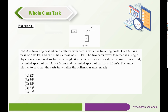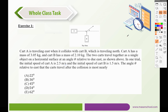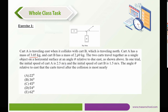Cart A is traveling east when it collides with cart B, which is traveling north. Cart A has a mass of 3.05 kg and cart B has a mass of 2.10 kg. The two carts travel together as a single object on a horizontal surface at an angle θ relative to east, as shown. In one trial the initial speed of cart A is 2.5 m/s and the initial speed of cart B is 1.5 m/s. The angle θ relative to east that the carts travel after the collision is most nearly — we need to find this angle θ.